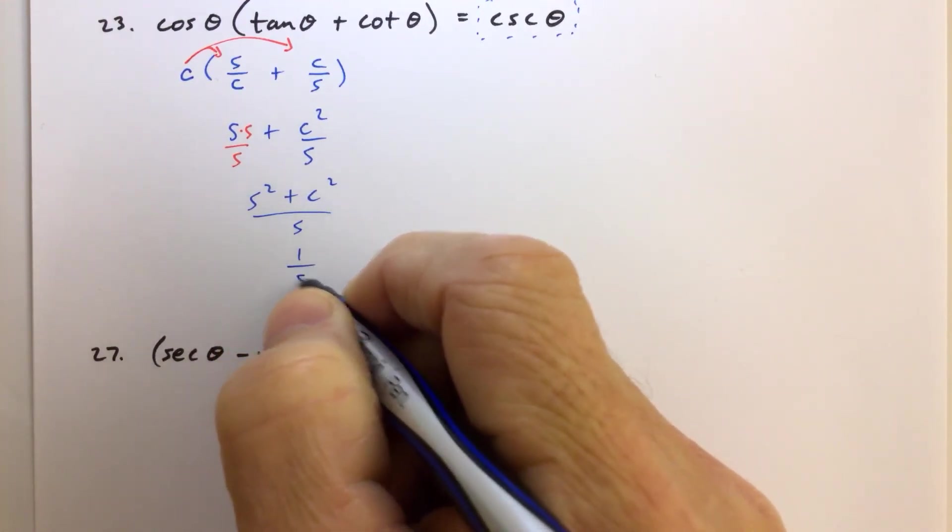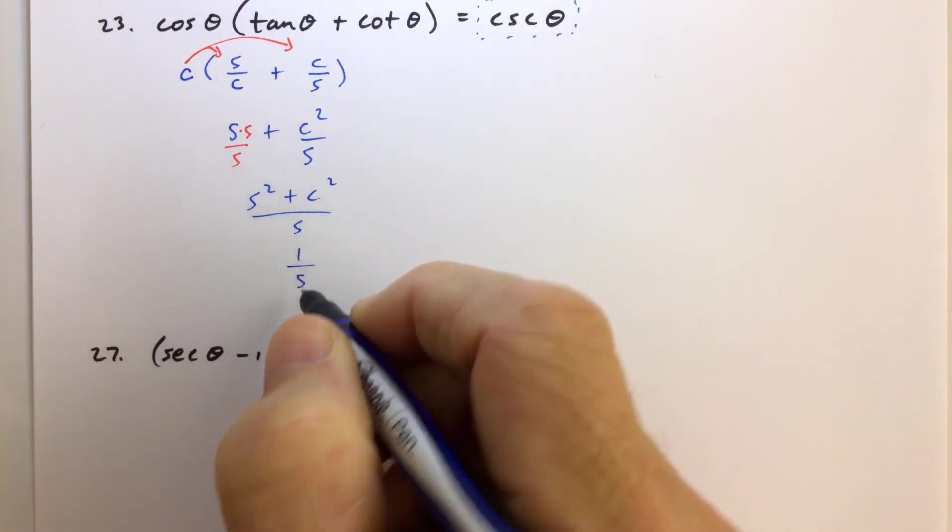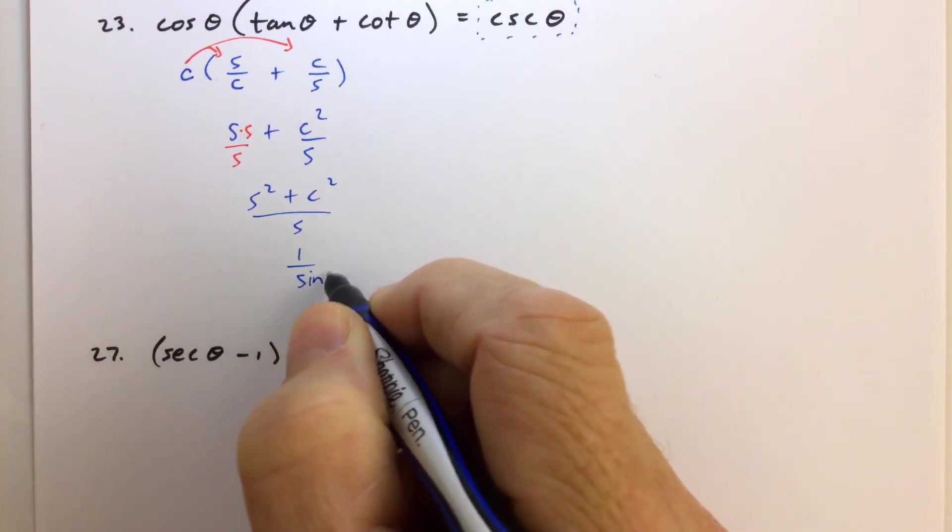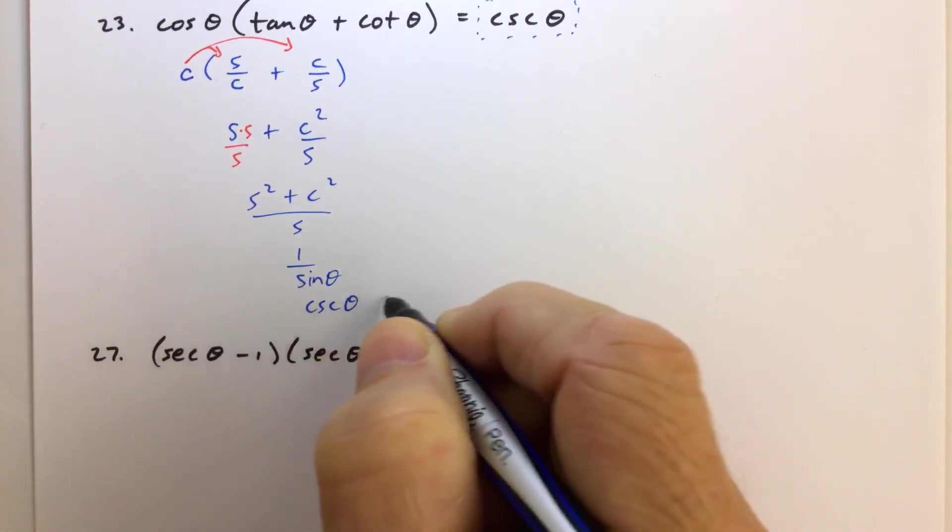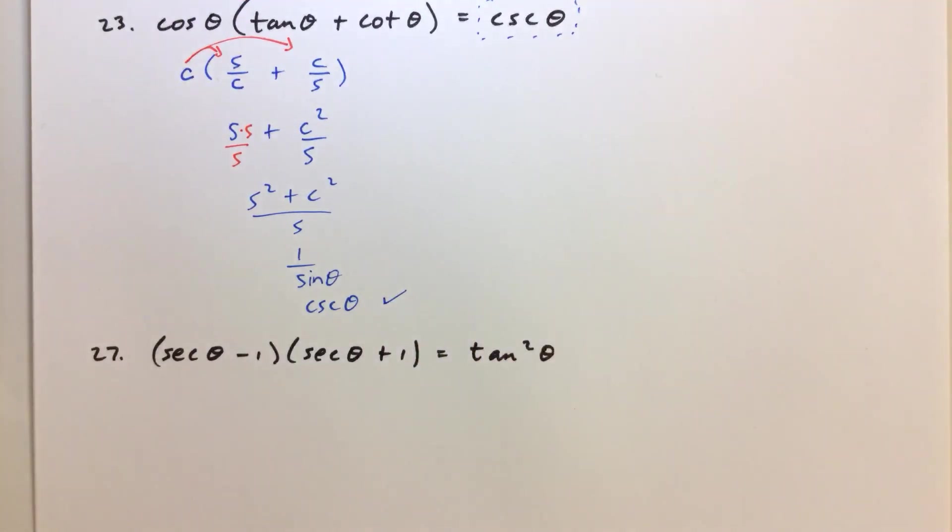Well, that's just one, and then one over sine of theta, so we'll put the sine of theta in there, is cosecant of theta, check. So, that's it.